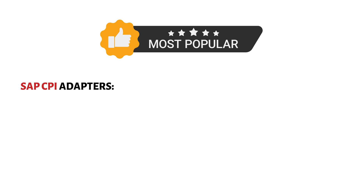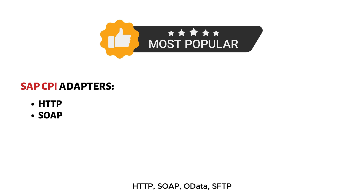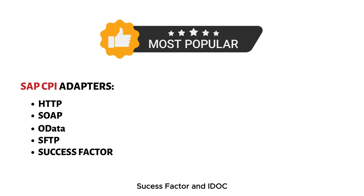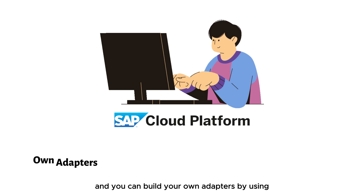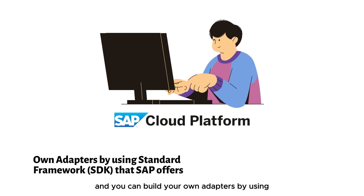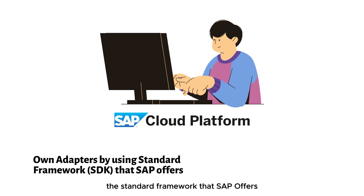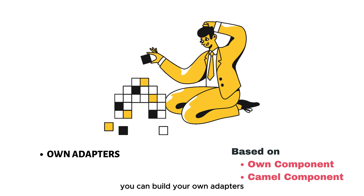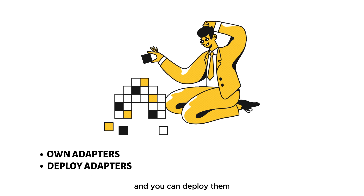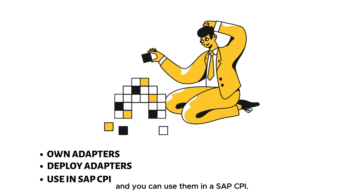In real time, the most popular adapters that you would use in SAP CPI are HTTP, SOAP, OData, SFTP, SuccessFactors, and IDoc. If the standard adapters are no longer helpful for you, you can build your own adapters by using the standard framework that SAP offers. By using this SDK, you can build, deploy, and use your own adapters in SAP CPI.